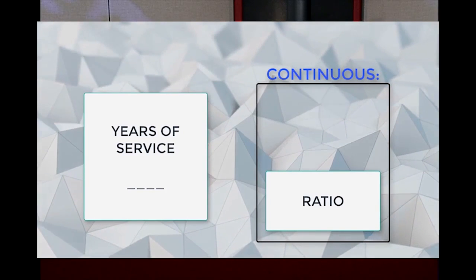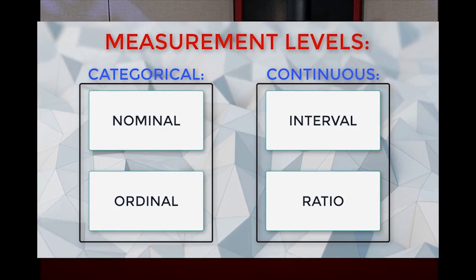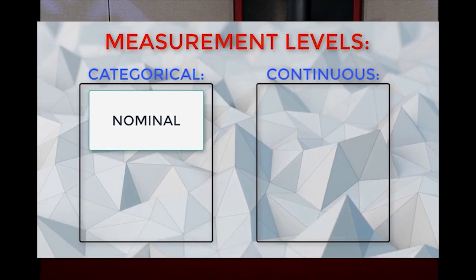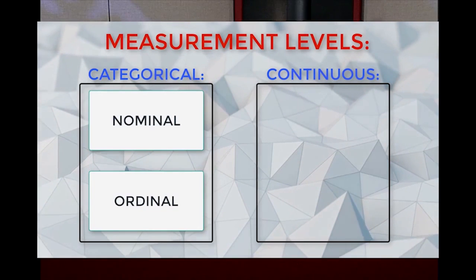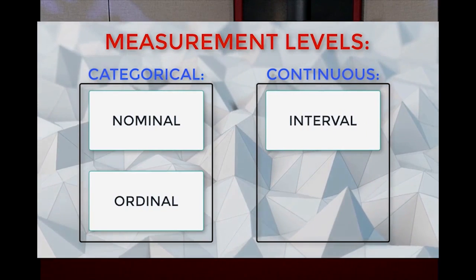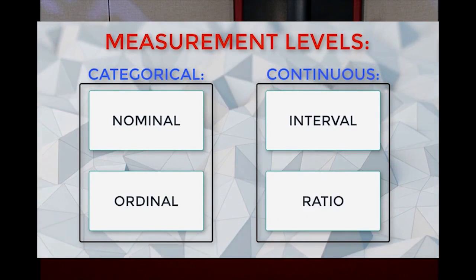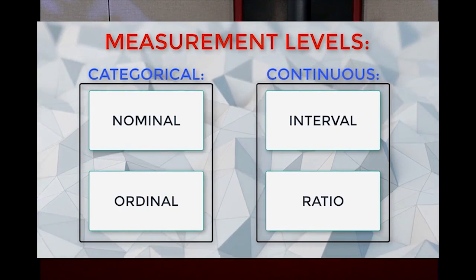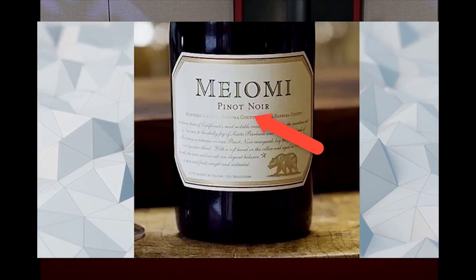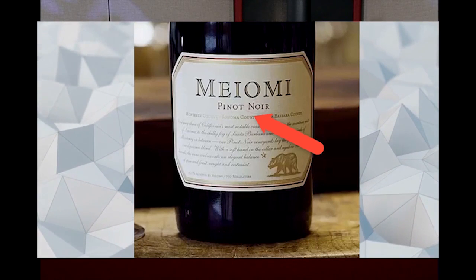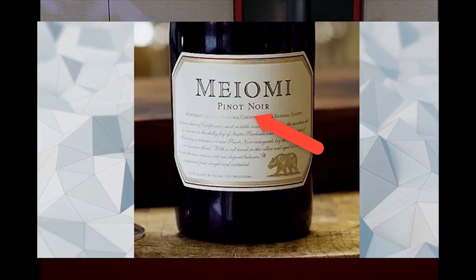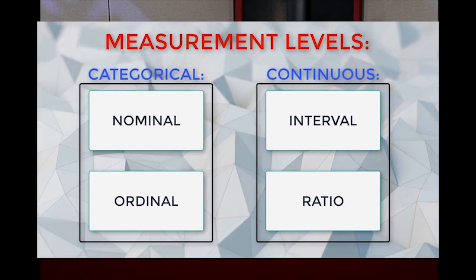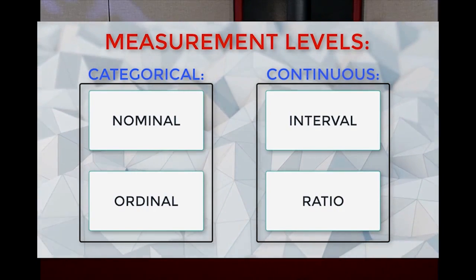In review, we have four levels of measurement used in quantitative research: NOIR. Nominal — categorical measurement in name only, where order doesn't matter. Ordinal — categorical measurement where order does matter. Interval — continuous measurement with equal intervals. And ratio — continuous measurement with equal intervals and an absolute zero. An easy way to remember these in proper order is to think of the wine Pinot Noir. The collection of certain variables yields different information, variance, and options for analysis.